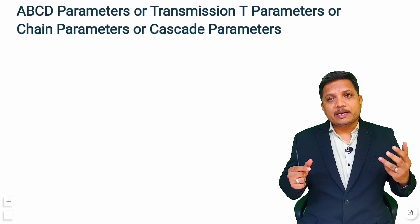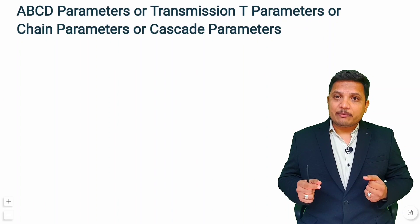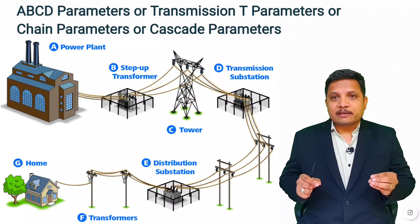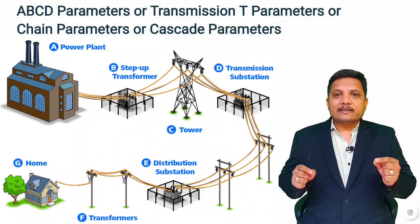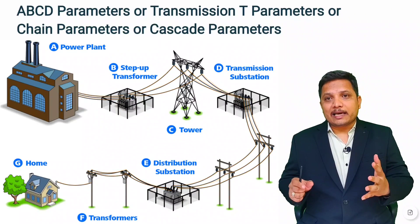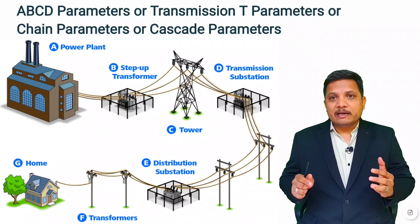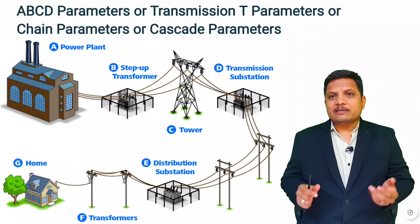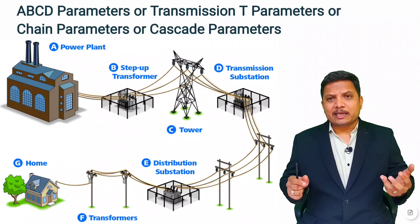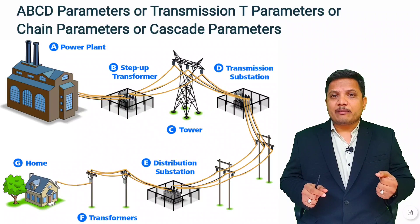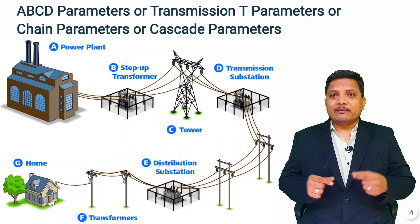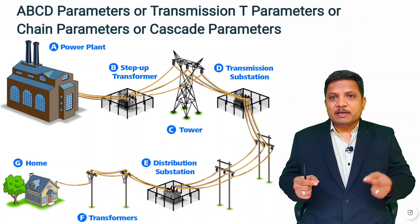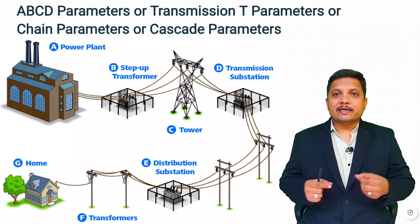Let us first understand the basic application of ABCD parameter. ABCD parameter, or transmission parameter, is used in transmission lines. In power transmission lines, we use ABCD parameter for measurement of transmitted power, transmitted voltage, transmitted current, power factor, and many other quantities. Whenever you study power systems, you will observe that transmission line analysis is done using ABCD parameter or T parameter.